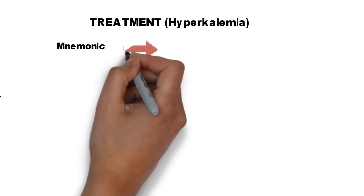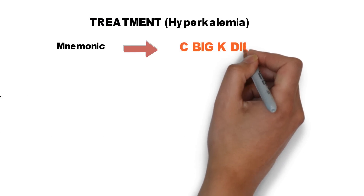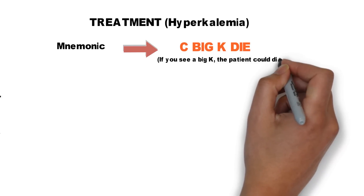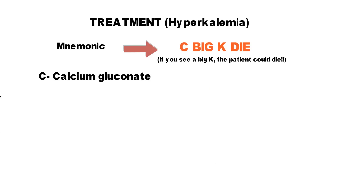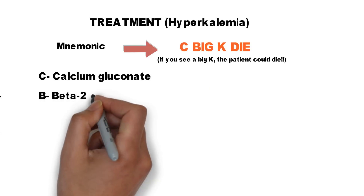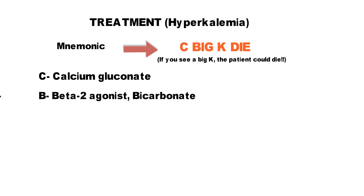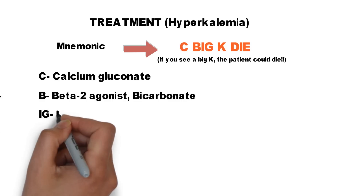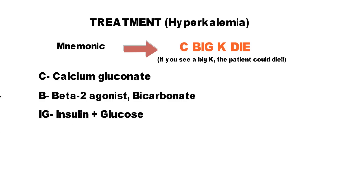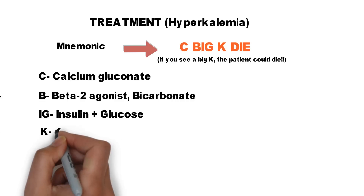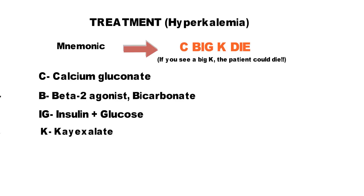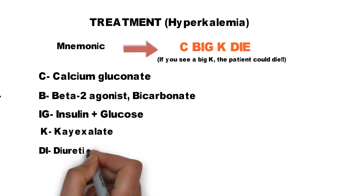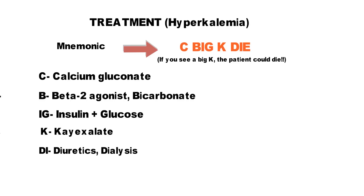Now the treatment for hyperkalemia, remembered by the mnemonic C BIG K DIE. If you see a big K, the patient could die. C for calcium gluconate — it stabilizes the cardiac membrane. B for beta-2 agonist or bicarbonate — they both shift potassium into the cells. IG stands for insulin plus glucose — insulin shifts potassium into the cells, and glucose is given to avoid hypoglycemia. K for kayexalate — it binds potassium in the gut and is excreted in the feces, lowering total body potassium. DI for diuretics — that is Lasix — or dialysis, if refractory to all other treatment options.